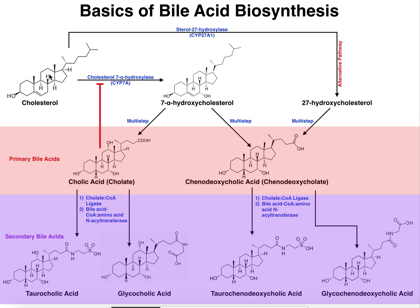Let's discuss the synthesis of what we call primary bile acids. Our starting material is cholesterol, and we have this enzyme found in the liver called cholesterol 7-alpha-hydroxylase — sometimes written as CYP7A because this is a cytochrome P450 enzyme. What this enzyme does is hydroxylate the molecule of cholesterol at the 7 position, adding an OH group, giving us 7-alpha-hydroxycholesterol. Before we get to the primary bile acids, you should notice that several changes are going to have to be made to cholesterol before they're complete.